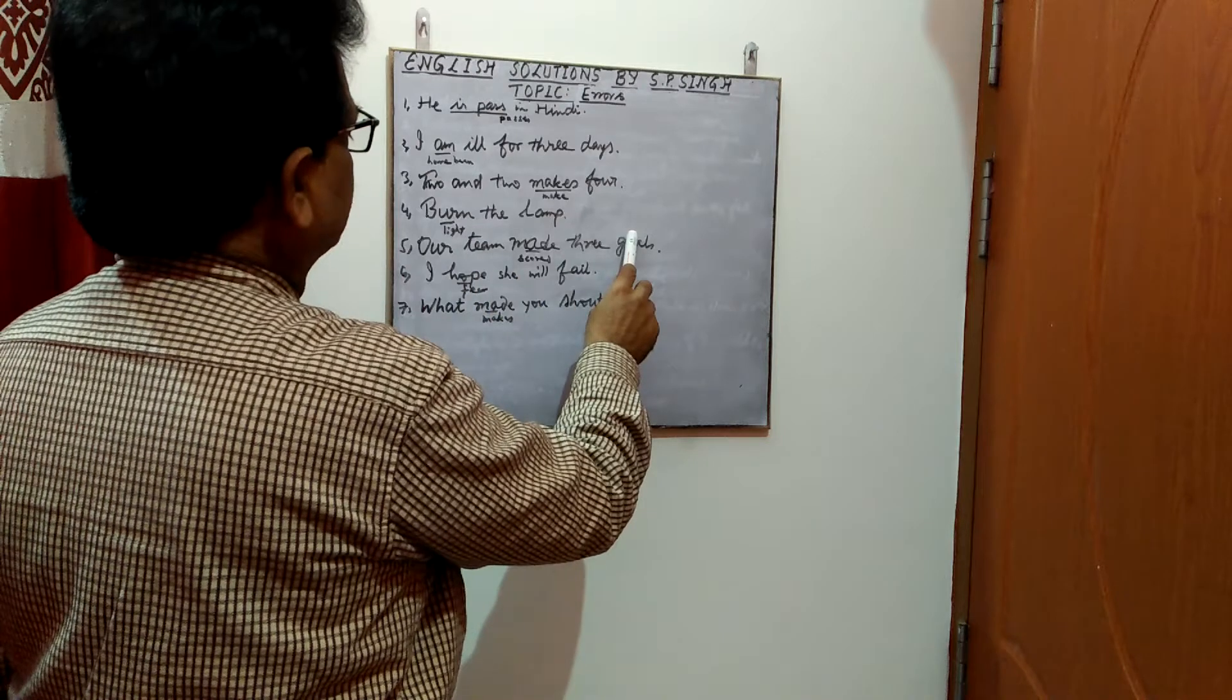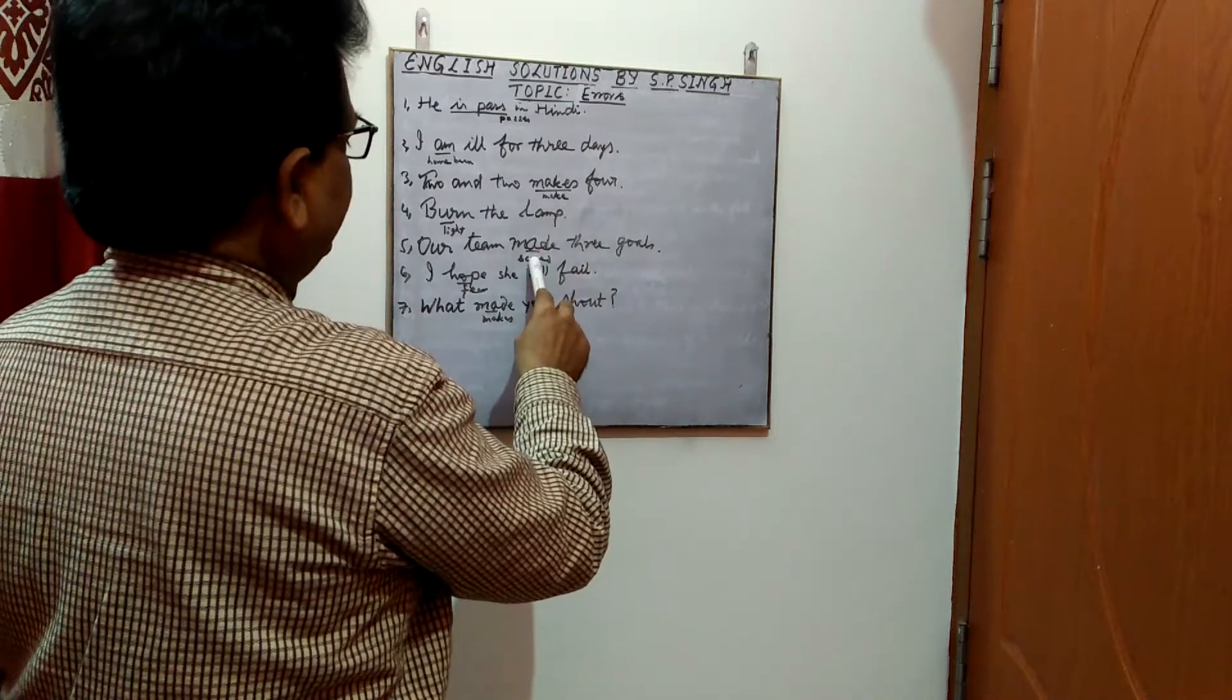Next, our team made 3 goals. Here made is wrong. Made is to be replaced by scored.